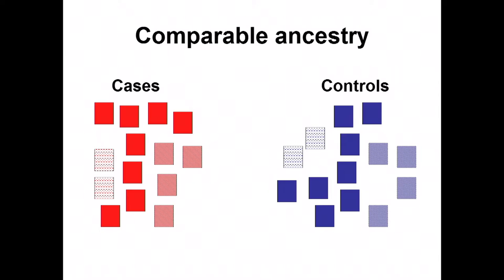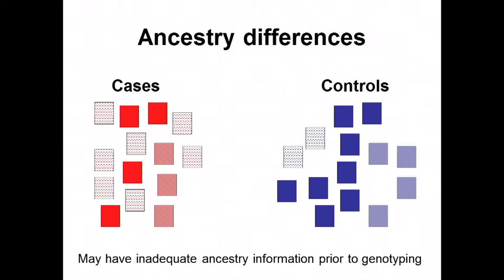Another important aspect is to try to match individuals based on ancestry, because allele frequencies differ between populations. For example, different shadings in cases and controls represent individuals from different subpopulations that may have different allele frequencies across the genome. If there are ancestry differences — where one subpopulation is overrepresented in cases versus controls — this can lead to population stratification and false positive associations between variants and disease risk.